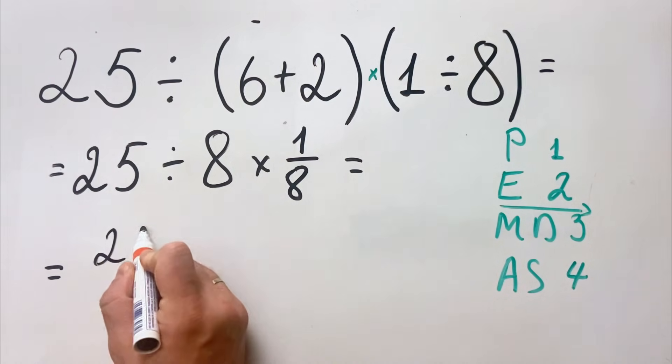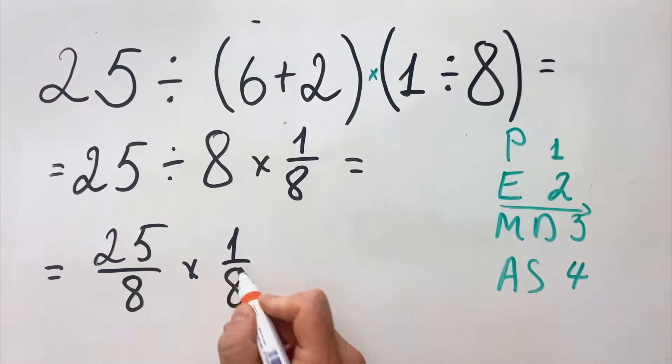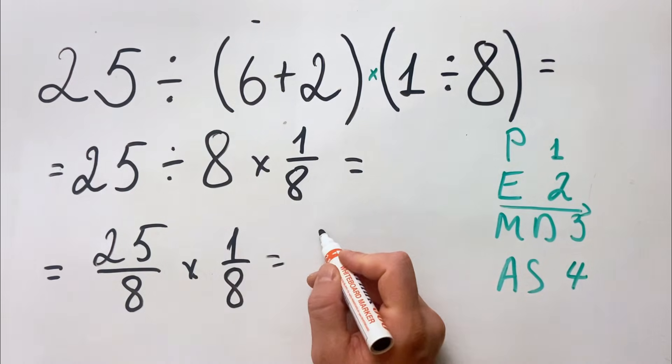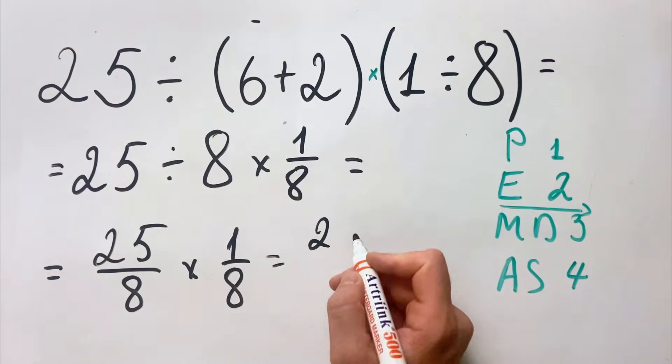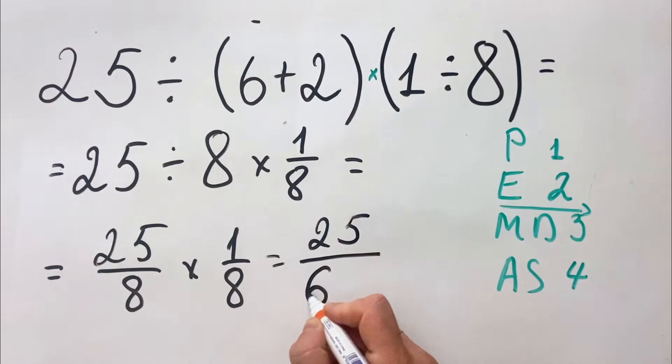So we have 25 over 8 multiplied by 1 over 8. When we have multiplication, we multiply the numerators and then we multiply the denominators. So we have 25 multiplied by 1 over 64.